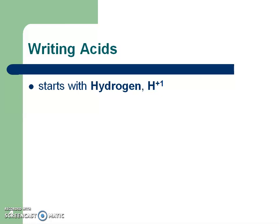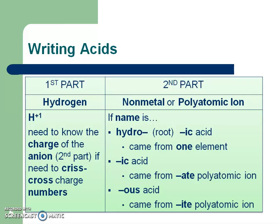When we're dealing with acids, acids are always going to start with the element hydrogen, and that's going to be H plus 1, always with an acid. Hopefully you paused and you read this information. It might not make too much sense yet, but it will when we do the example problems. So the first part of an acid is always going to be hydrogen.